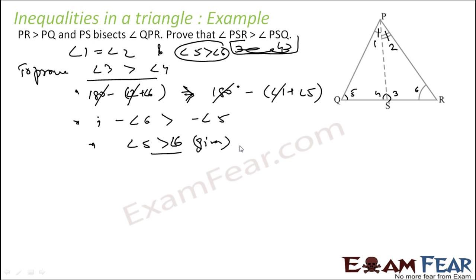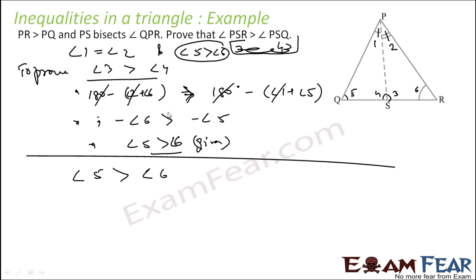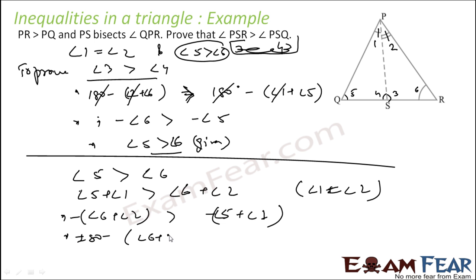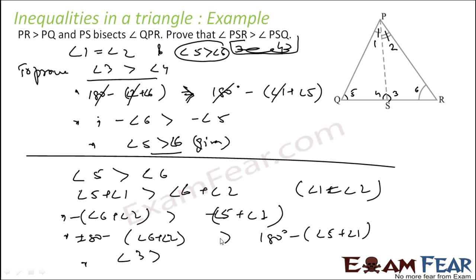Since this is given, this is true. So angle 3 is greater than angle 4. The other approach: since angle 5 is greater than angle 6, just add angle 1 and angle 2 respectively. Angle 5 plus angle 1 is greater than angle 6 plus angle 2 — using angle 1 equals angle 2. So 180 minus (angle 6 plus angle 2) is greater than... wait, rearranging: 180 minus (angle 6 plus angle 2) equals angle 3, and 180 minus (angle 5 plus angle 1) equals angle 4. And that is what we had to prove. Pretty easy.